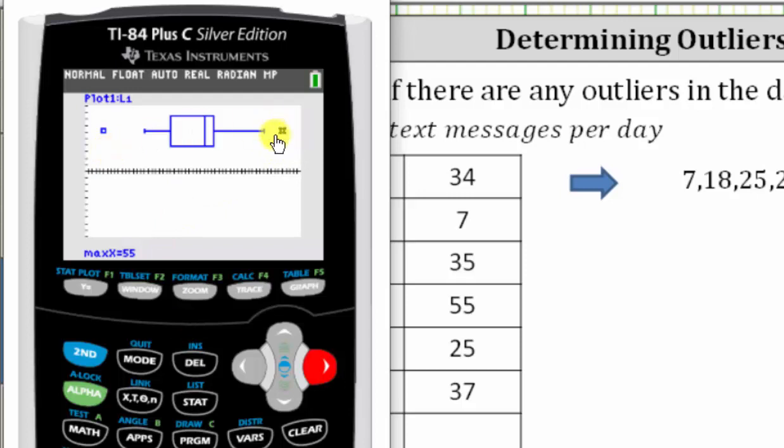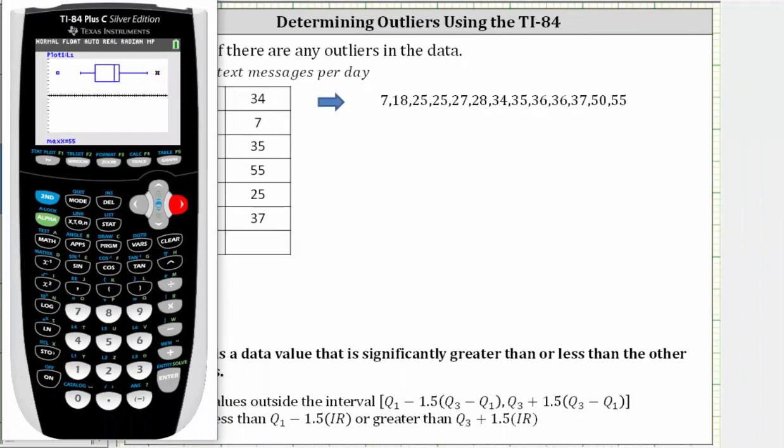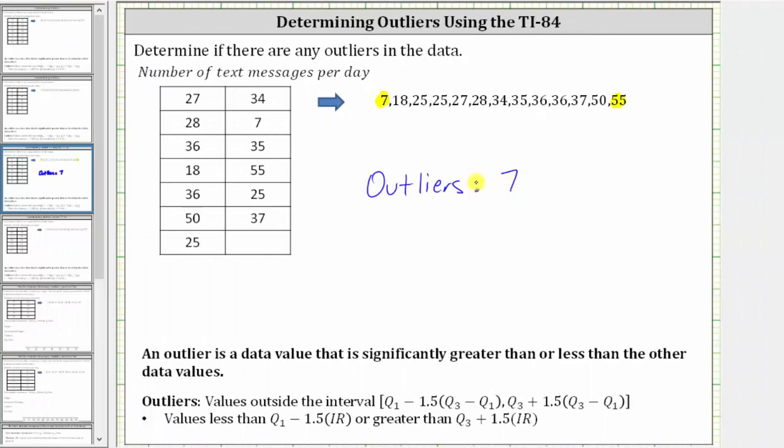Right arrow one more time gives us the other outlier of 55. So again, we have two outliers because we have two points beyond the tails or whiskers of the box plot. The two outliers are seven and 55. The seven is considered significantly less than the rest of the data values, and the 55 is considered significantly greater than the rest of the data values.